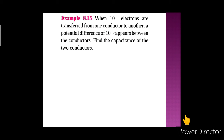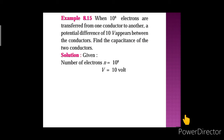Example 8.15: When 10 raise to 8 electrons are transferred from one conductor to another, a potential difference of 10 volt appears between the conductors. Find the capacitance of the two conductors. So over here, it is given that the number of electrons n is 10 raise to 8, and V is given as 10 volt.